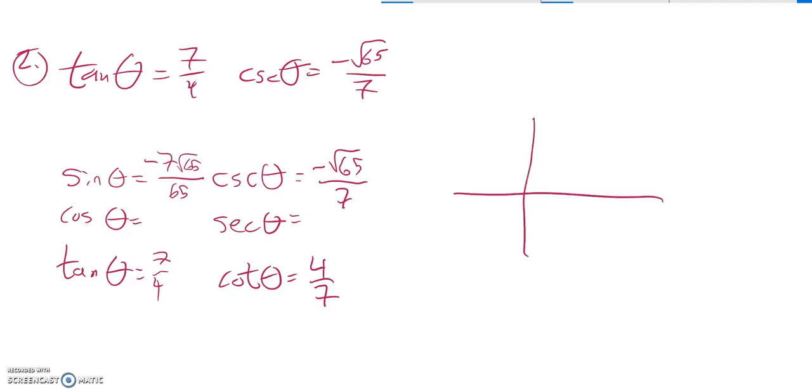Tangent's positive. So that means it's either here or here. But cosecant's negative, which means sine's negative. It means it must be going down. So our angle must terminate here in this third quadrant.